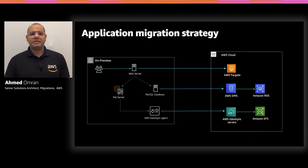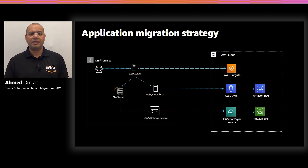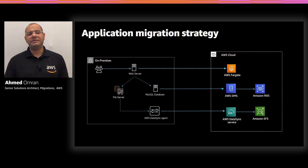To recap, this is the migration strategy for my application. We'll run the web server on AWS Fargate with Amazon ECS, utilizing my existing web server container image. For the database, we will migrate to Amazon RDS using AWS Database Migration Service. And finally, the file server will be migrated to Amazon EFS using AWS DataSync service.